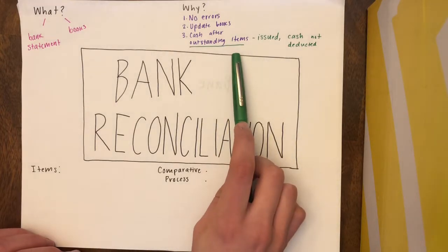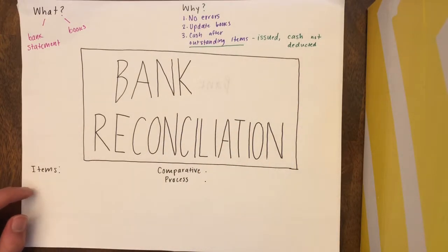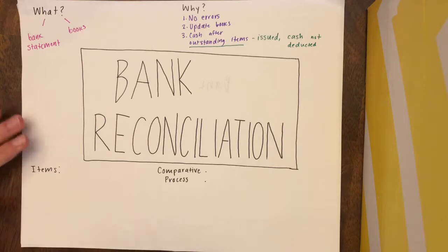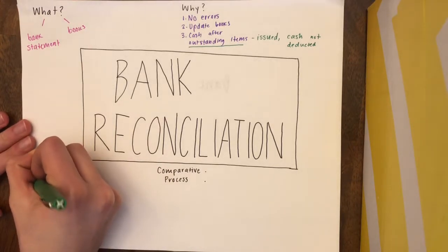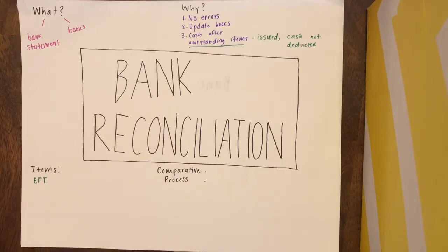An outstanding item is one item that can be on an account. Other items that are in bank accounts are electronic funds transfers, abbreviated as EFT. An electronic funds transfer is when funds are transferred to an account without the recipient being notified. For example, one company may be issuing funds to pay back another company for something they purchased, without notifying the company that should be receiving the money.